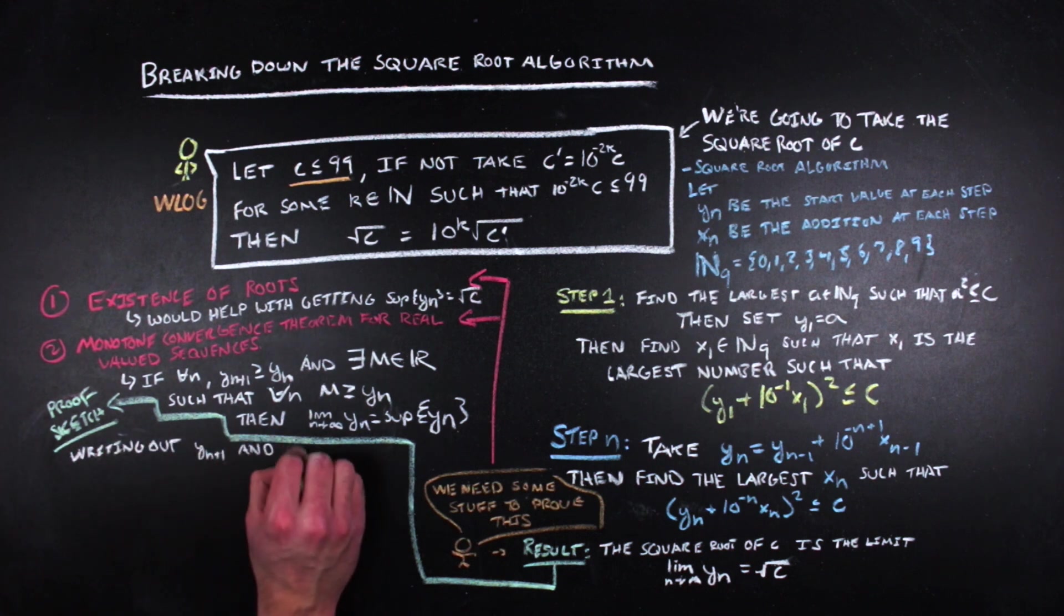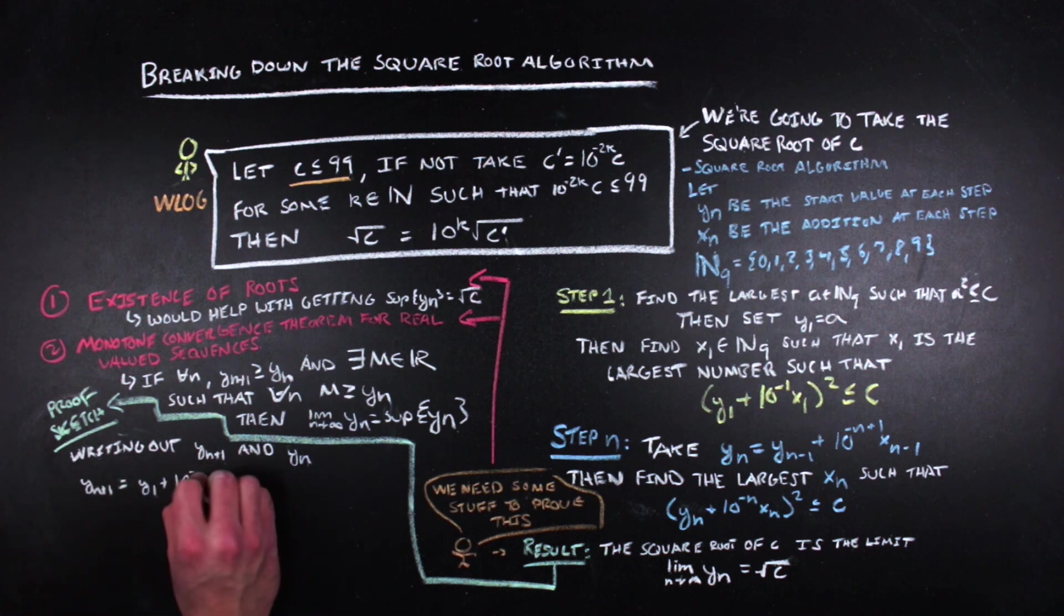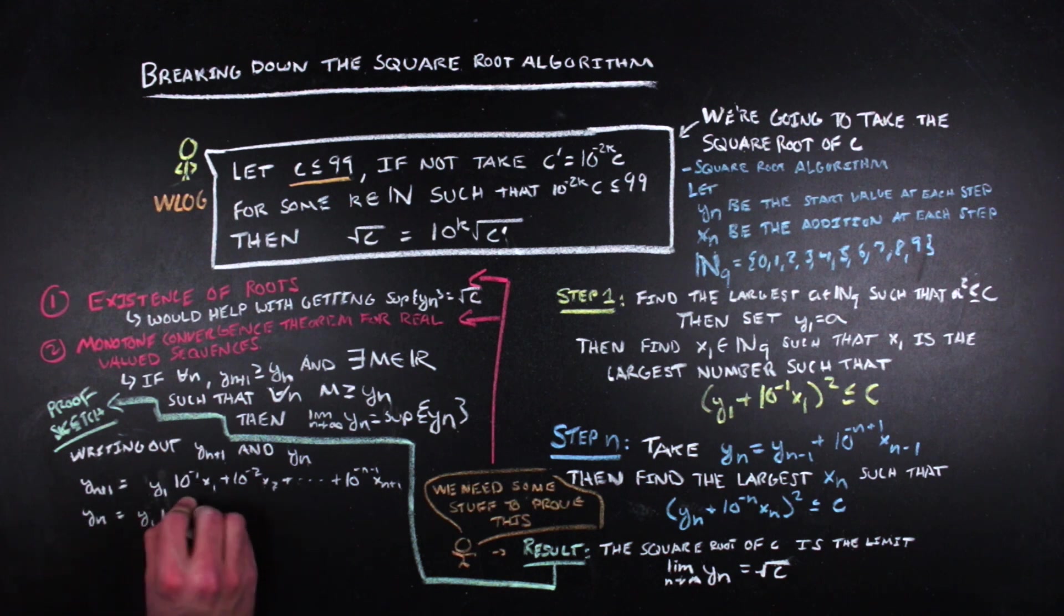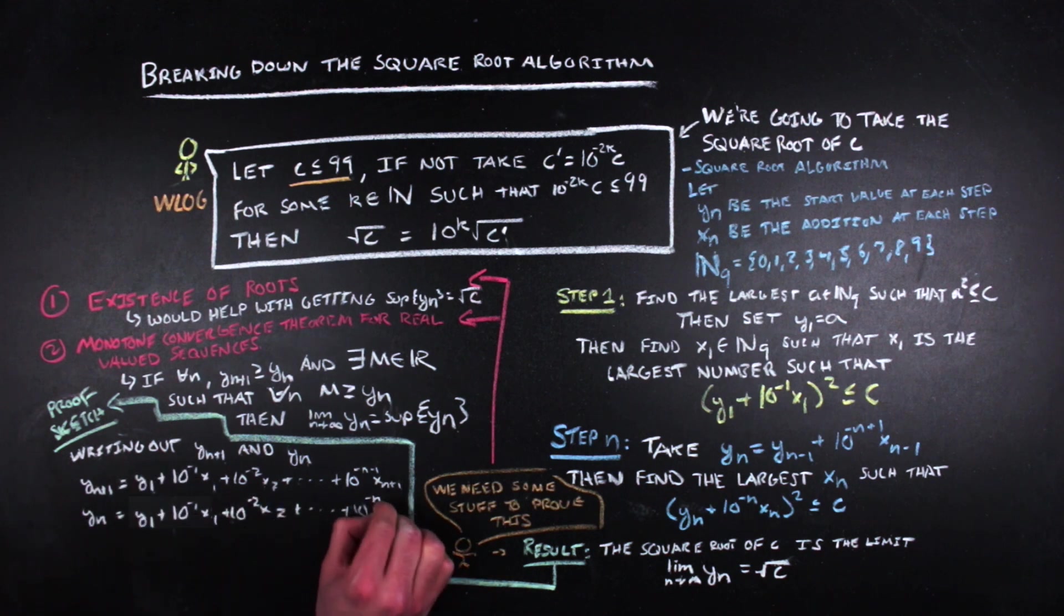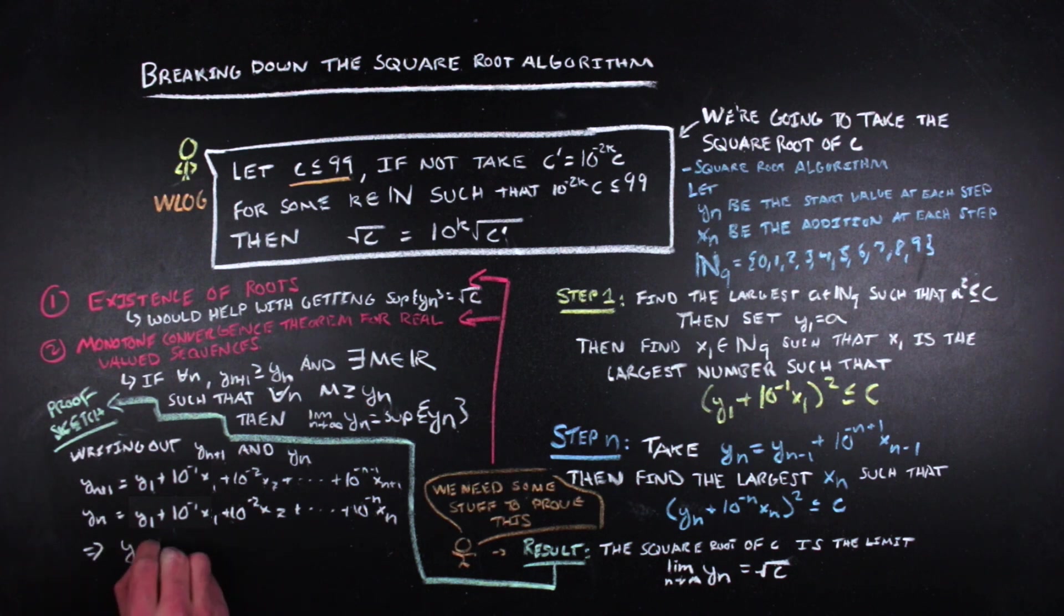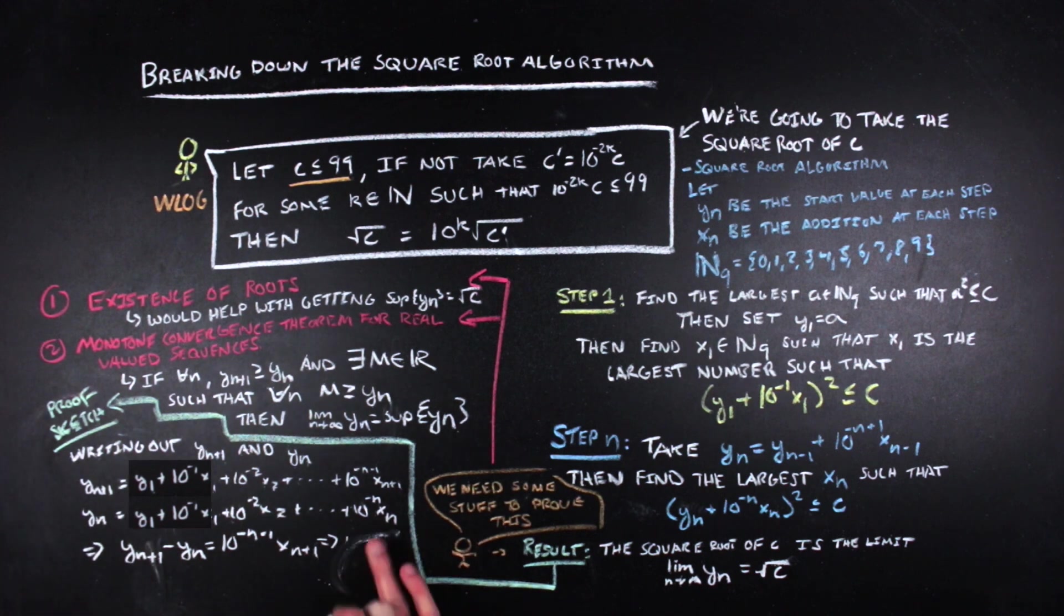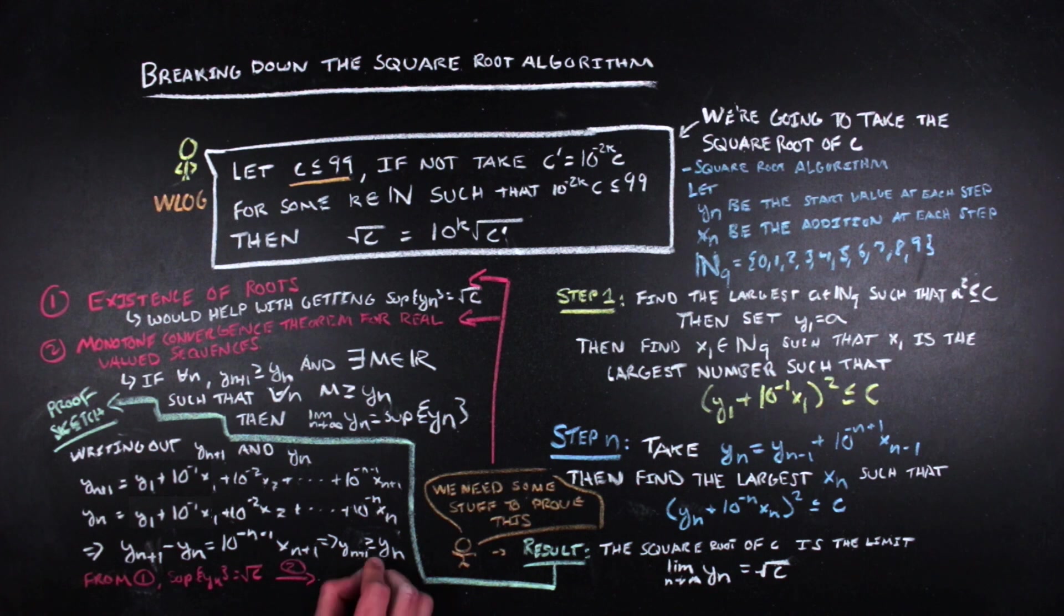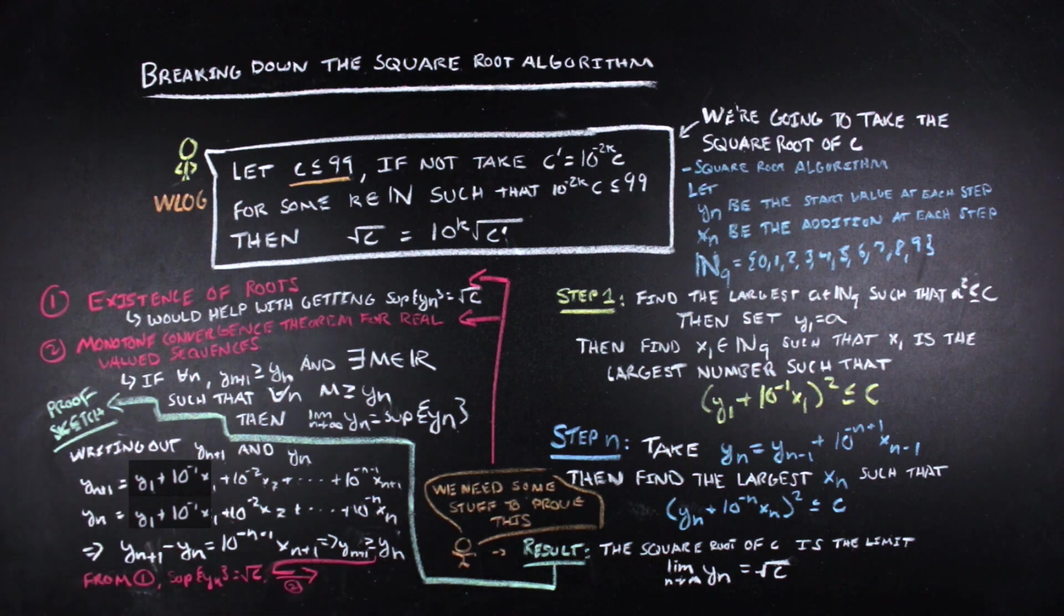Next, we know that y sub n is increasing, and we can see this from writing out y sub n and y sub n plus 1, and then subtracting the two to yield a leftover 10 to the negative n minus 1 x sub n plus 1, which is a small but still positive number, which means that the difference is greater than 0, and so we can say that y sub n plus 1 is greater than y sub n. And since we didn't need to pick an n to do this, we can say this for all n. So taking the value of the supremum and applying the monotone convergence theorem for real valued sequences gives us the limit of y sub n is equal to the square root of c.